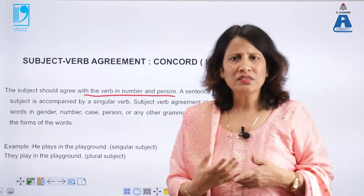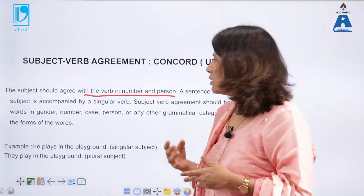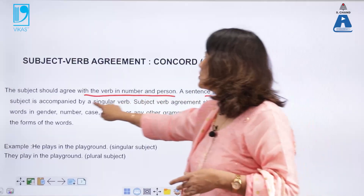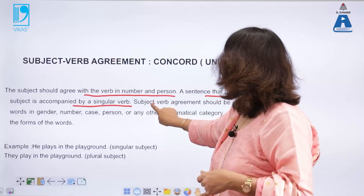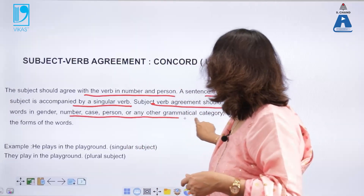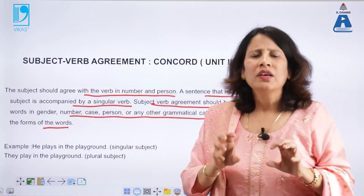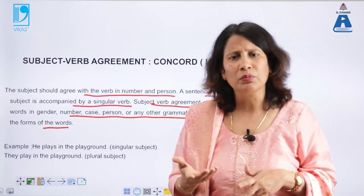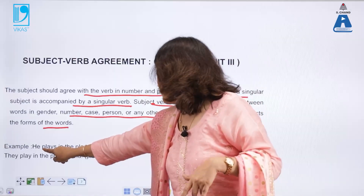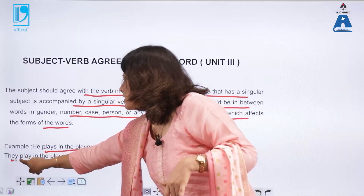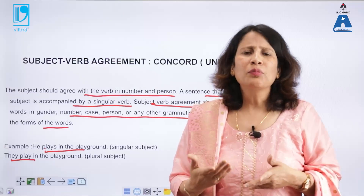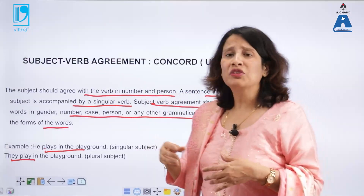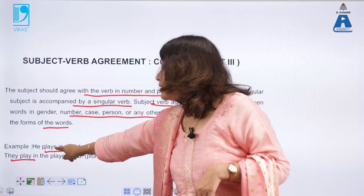This agreement is important because when subject and verb are not in agreement in number, there will be inaccuracy of language and we may go wrong in writing and speaking English. A singular subject is accompanied by a singular verb, while agreement should be in terms of gender, number, case, person, or any other grammatical category. For example: 'He plays in the playground' versus 'They play in the playground'; 'The boy sings a beautiful song' versus 'Boys sing a beautiful song.' So 'boys' is a plural subject followed by the plural verb 'sing,' and 'he' is a singular subject followed by the singular verb 'plays.'